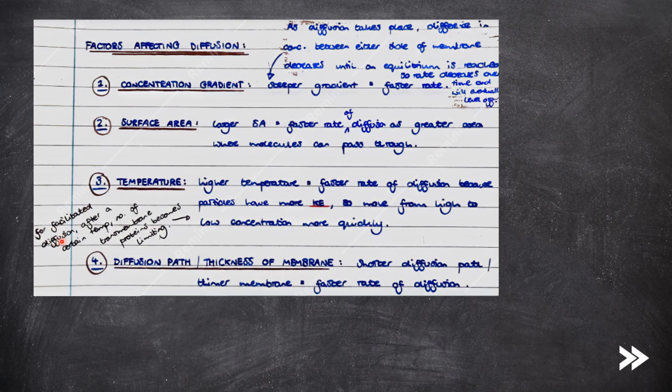Note that for facilitated diffusion, after a certain temperature, the number of transmembrane proteins becomes limiting. Then we have diffusion path, or the thickness of the membrane. The shorter the diffusion path, or the thinner the membrane, the faster the rate of diffusion.